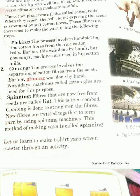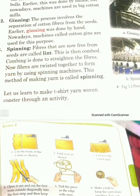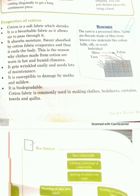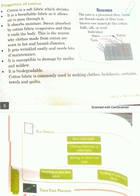The cotton plants bear fruit called cotton bolls. When they are ripened, the bolls burst, exposing the seed surrounded by soft cotton fiber. The processing steps we have completed are: first picking, then ginning. Today we are going to do the properties of cotton.